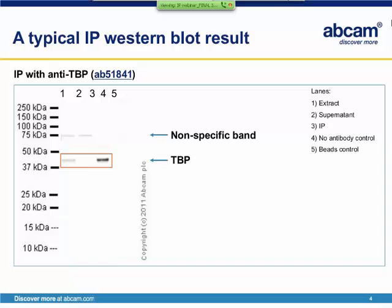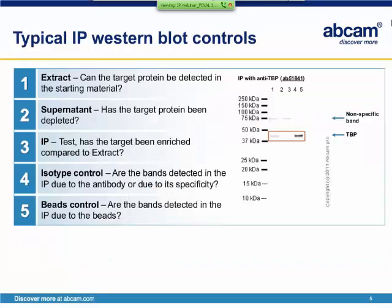This blot contains all the typical IP western blot controls. I just want to talk you through these controls. The first lane is the extract or input, the starting material. This is loaded on the gel to determine if the target can be detected in the starting material. This is not always the case, as sometimes enrichment by IP is required to visualize the protein.